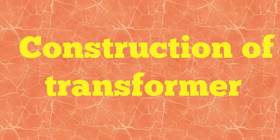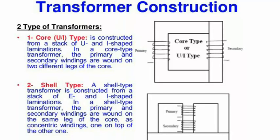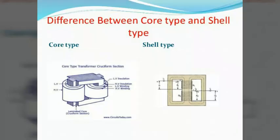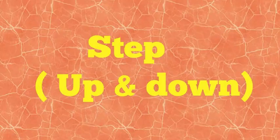On the basis of construction, I will explain core type and shell type transformers. In the core type transformer, U-shape and I-shape laminated cores are used. In the shell type transformer, E-shape and I-shape cores are used. The core type has two cores and the shell type has a different arrangement, as seen here.